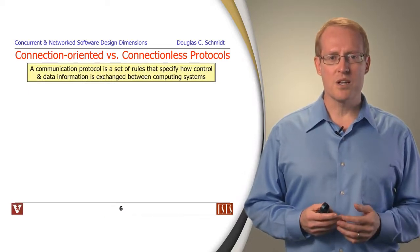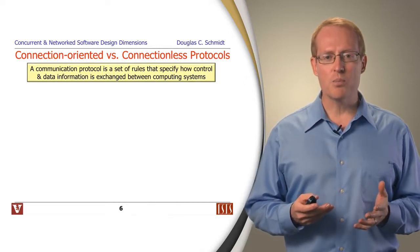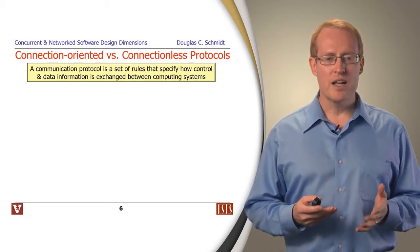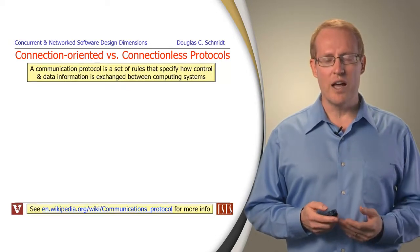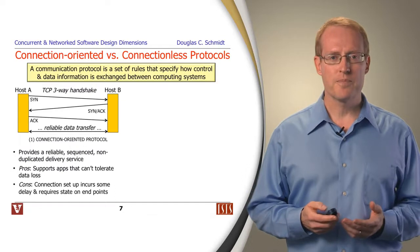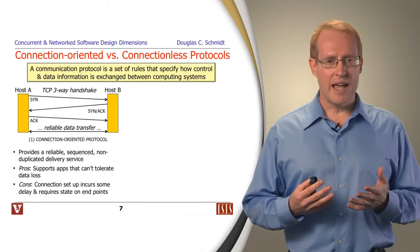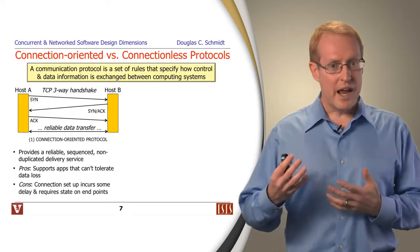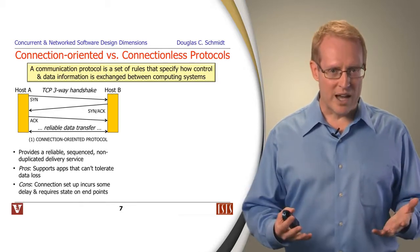The first topic we're going to discuss are the pros and cons of connection-oriented and connectionless protocols. A communication protocol is a set of rules that specify how control and data information is exchanged between computing systems. There's a nice discussion at Wikipedia about communication protocols that I recommend you take a look at. Connection-oriented protocols work by providing a reliable, sequenced, and non-duplicated delivery service. So you can send bytes or messages on one side and expect those bytes and messages to show up on the receiver side in order without losing the data.